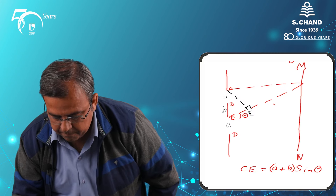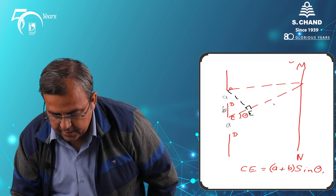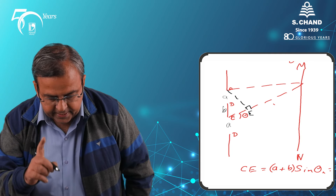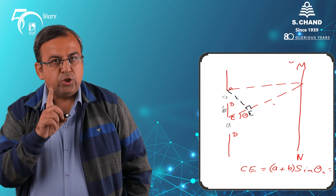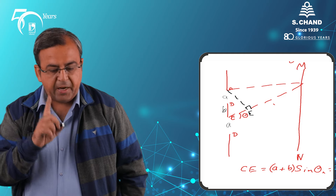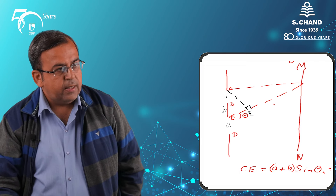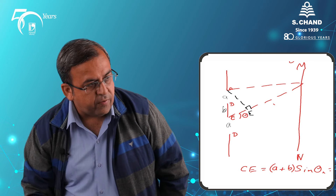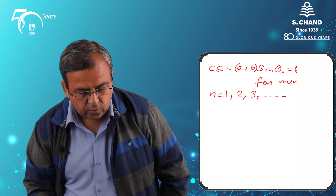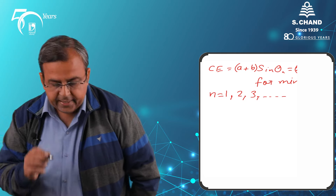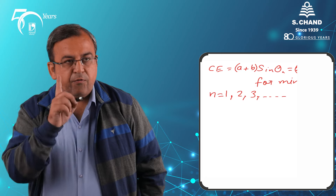For interference maxima and minima, if we see the previous lecture, we calculated CN equal to (A + B)sinθₙ = (2N + 1)λ/2. We obtained this because if the path difference is an odd multiple of λ/2, then theta gives the direction of minima due to interference of secondary waves from the two slits.